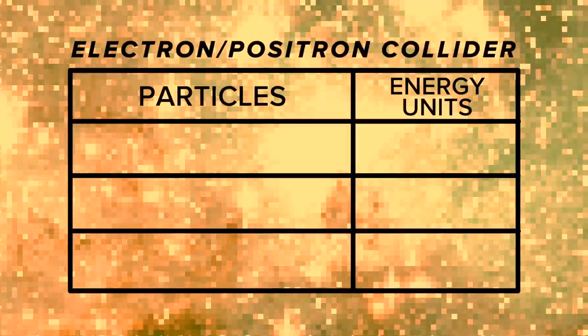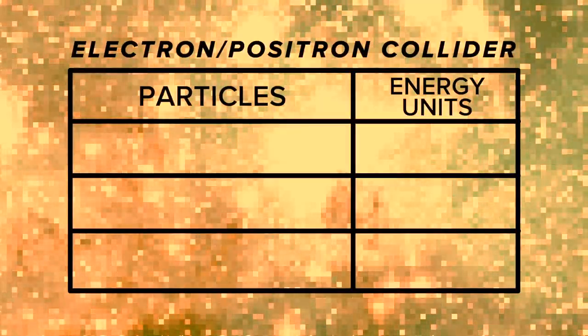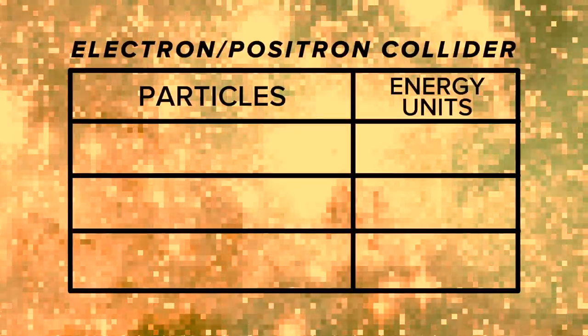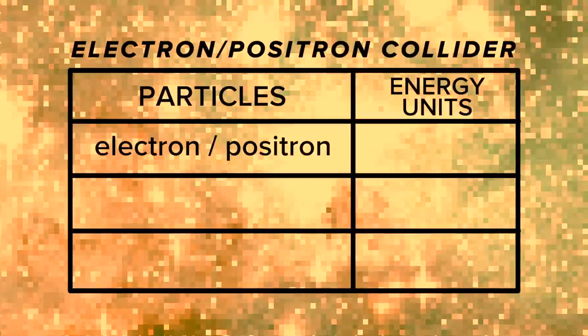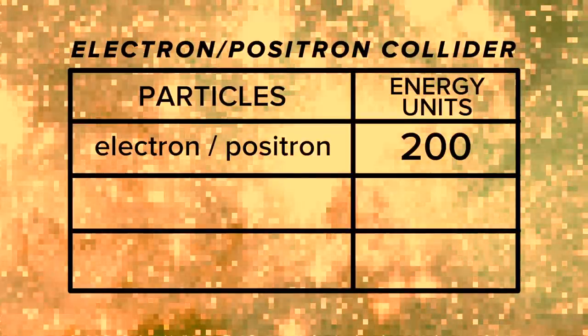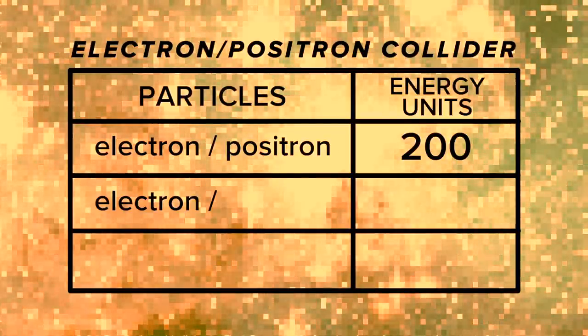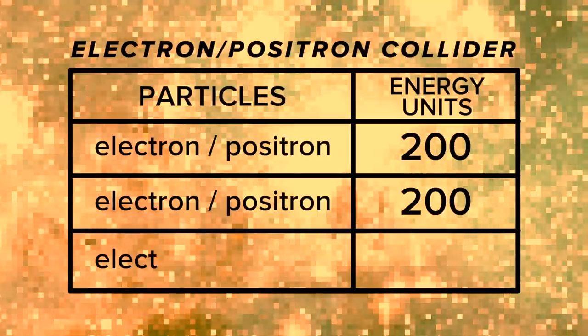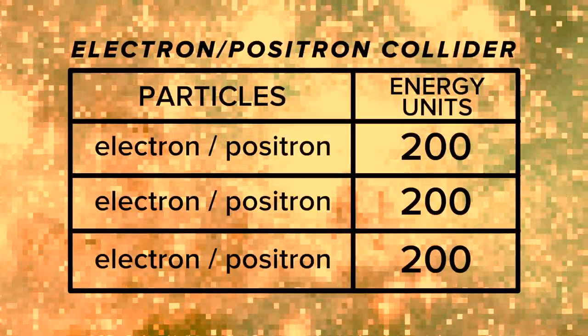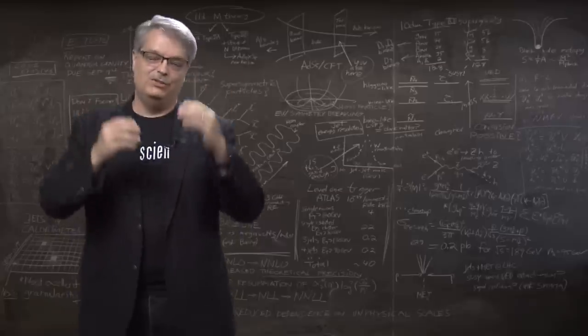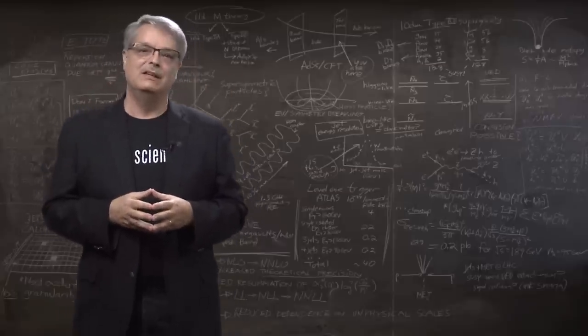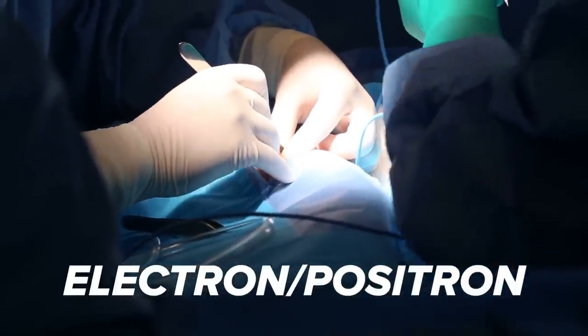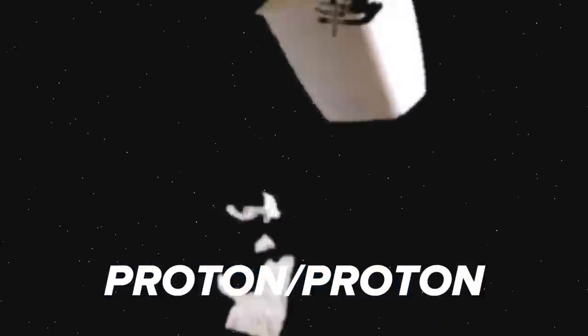Contrast this with a collider that has an electron and antimatter electron beam. By the way, the name for antimatter electron is positron. The first collision involves an electron and positron with 200 units of energy. The second collision involves an electron and positron with 200 units of energy. The third collision involves an electron and positron with 200 units of energy. The fourth collision, well, I bet you figured out the pattern. Physicists have called an electron-positron collider a scalpel, while a proton-proton collider are equivalent to colliding two garbage cans.